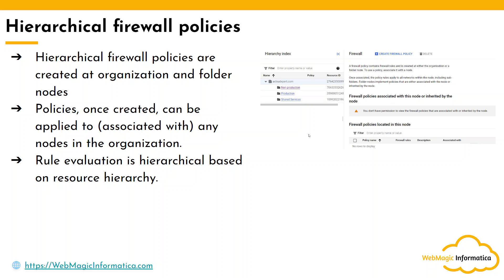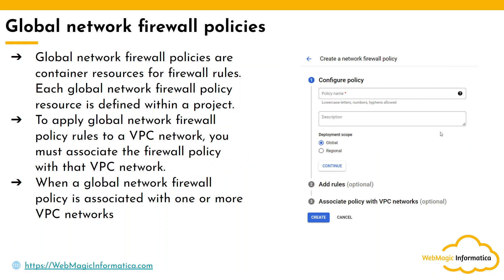Following the hierarchical policy, we have the global network firewall policy. As the name suggests, it is global. It is created at the project level — so instead of creating it at the folder or organization node, it gets created at the project. You can then associate it to all the VPCs within that project, and whatever rules you have inside this global network firewall policy get applied across all regions.